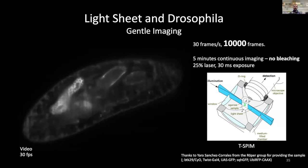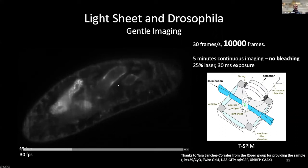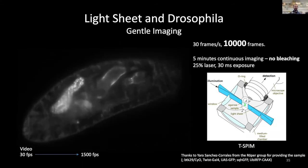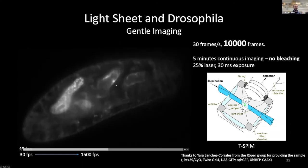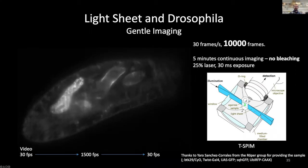Here is an example of how gentle light sheet imaging can be. This is a living Drosophila embryo undergoing peristalsis, imaged continuously for five minutes at 30 frames per second — 10,000 frames — with no bleaching of the sample. The middle section is sped up so you can see that at the end, brightness is the same as at the start. This would have bleached very rapidly on a confocal microscope. This was acquired on a T-SPIM arrangement with dual-sided illumination and detection.